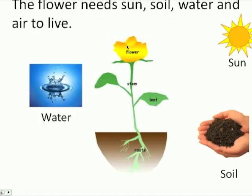And this is a flower. The flower needs sun, soil, water, and air to live. This is the flower, and it needs the sun, soil, water, and air. Air is what you breathe, to live.